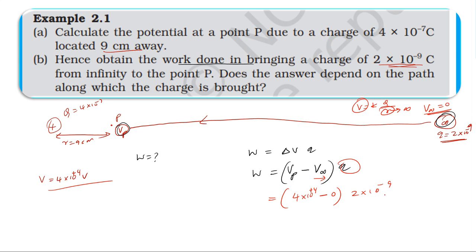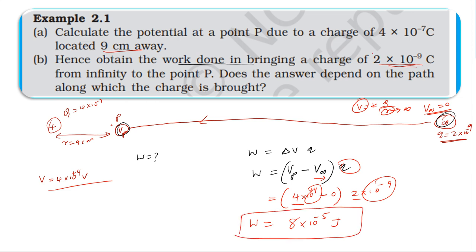So W = 2×10⁻⁹ × 4×10⁴ = 8×10⁻⁵ joules. This work done is independent of the path followed, because the electrostatic field is conservative. Whether you bring the charge along a straight line or any other path from infinity to point P, the work done is the same.